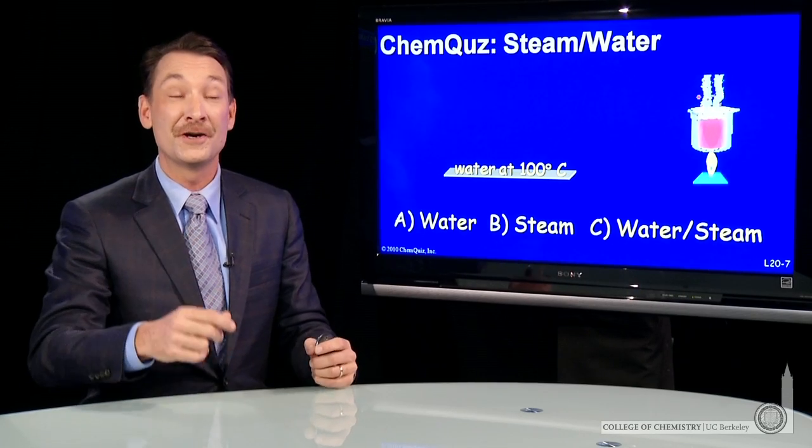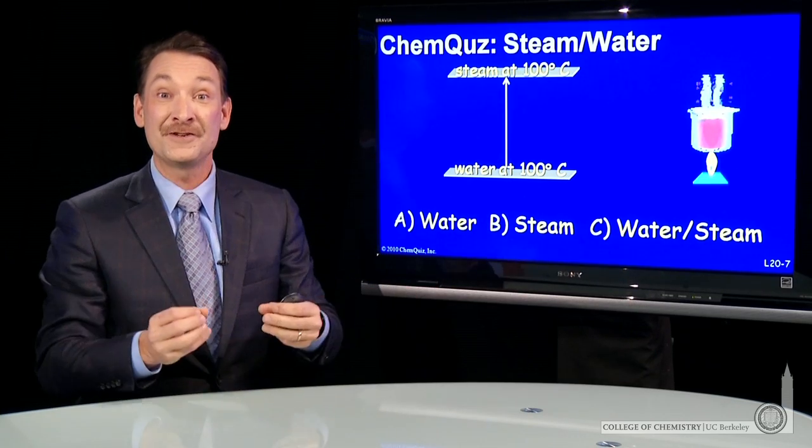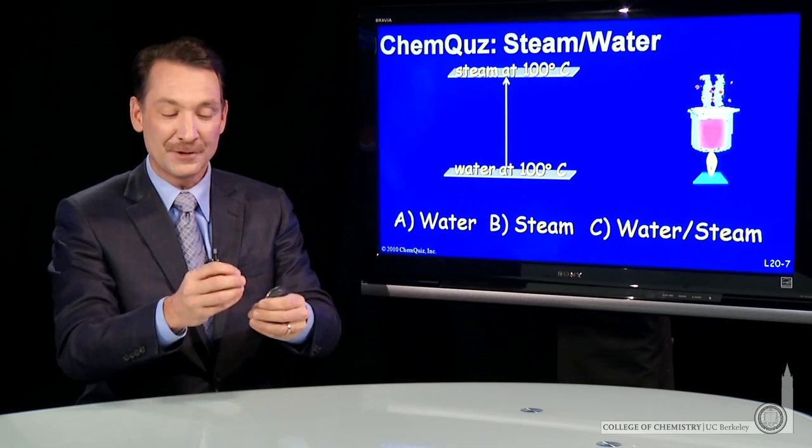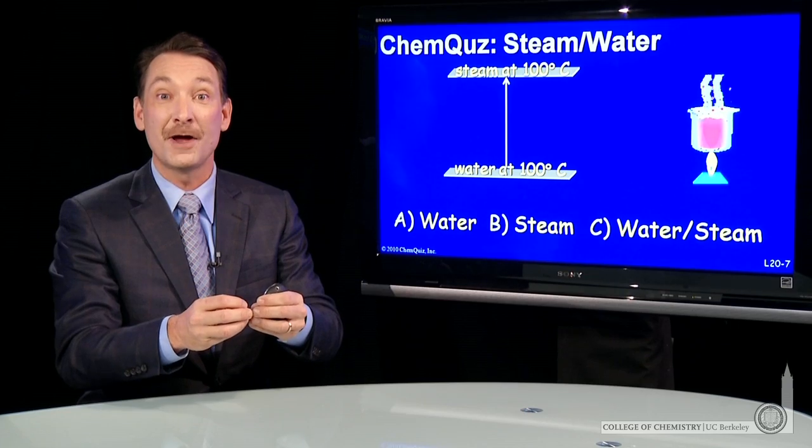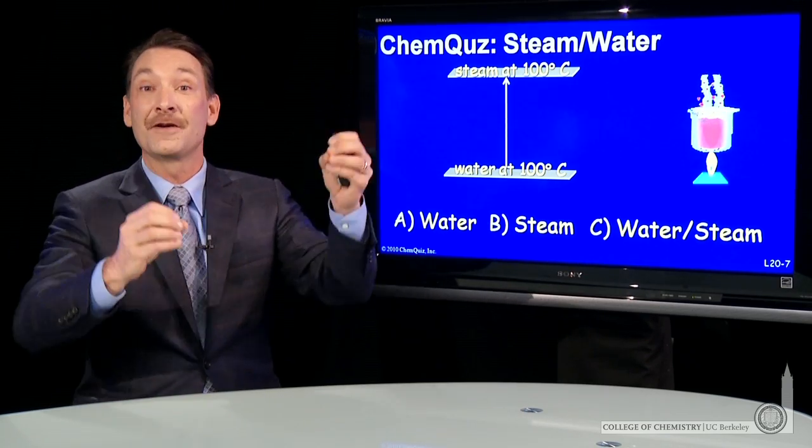When water boils at 100 degrees C and becomes steam at 100 degrees C, heat enters the system, and intermolecular bonds in the liquid are disrupted, and you get kinetic energy of the gas moving around as particles.